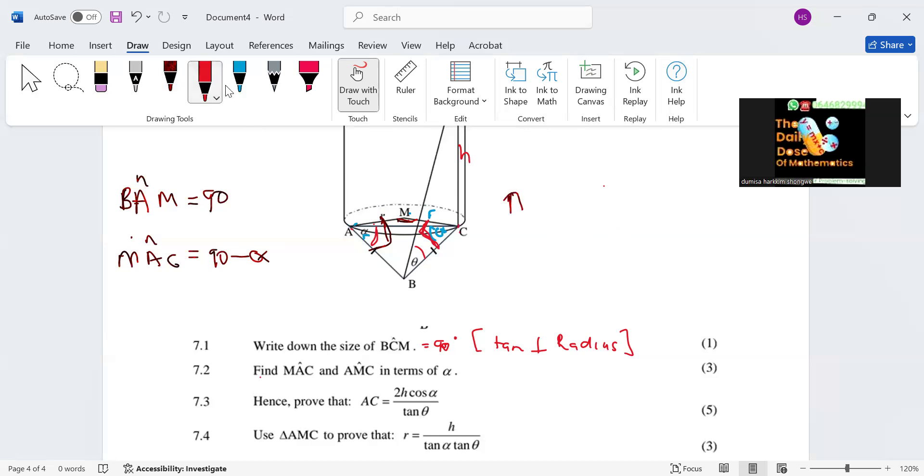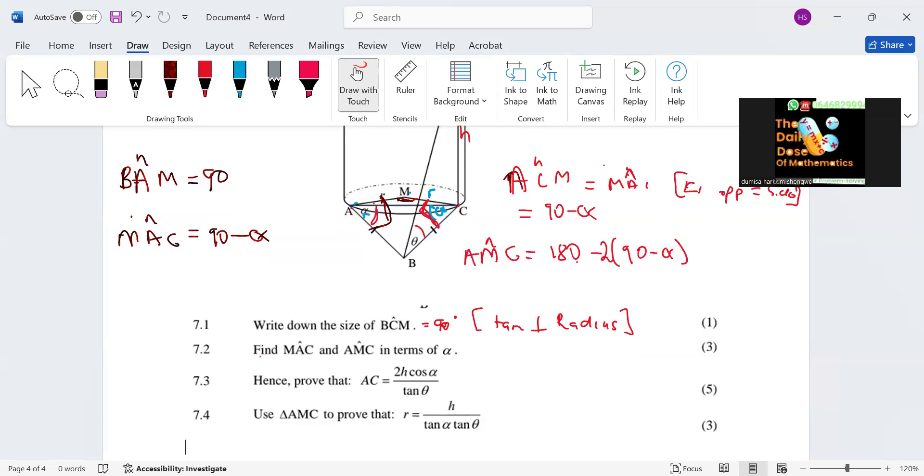Firstly, let's do this. We have ACM is equal to MAC, equal to 90 degrees minus alpha. It's angles opposite equal sides, opposite equal sides. Both of them are equal to 90 minus alpha. So now we want AMC basically. AMC is going to be equal to 180 degrees minus 2 into 90 minus alpha.